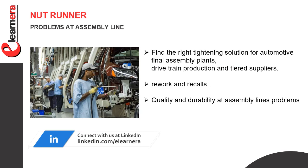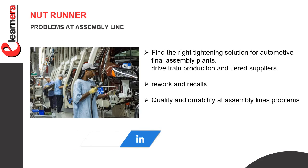Second is where nut runners are used. First, find the right tightening solution for automotive final assembly plants, drive train production, and tiered supplies. Next point is rework and recalls. Third is quality and durability at assembly lines — we find some solutions.